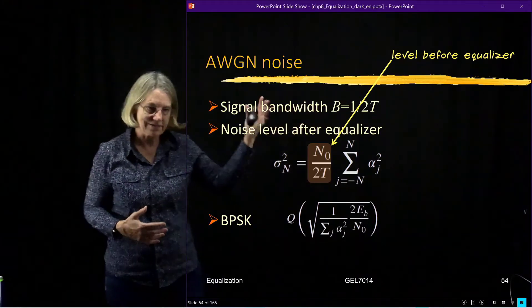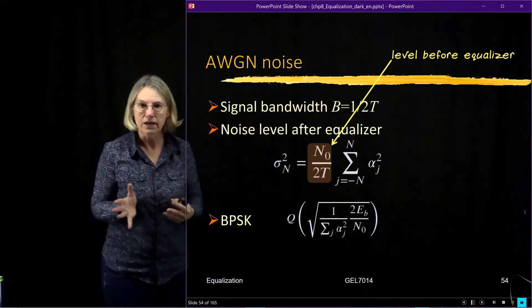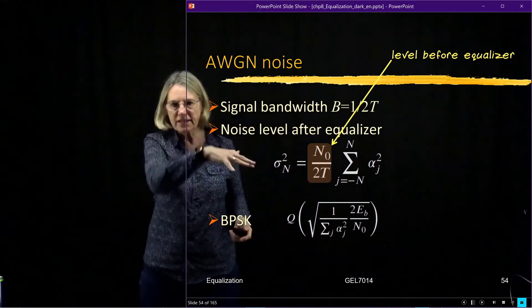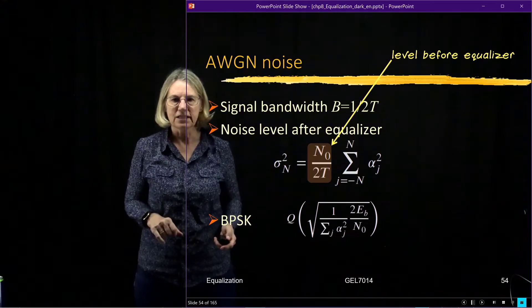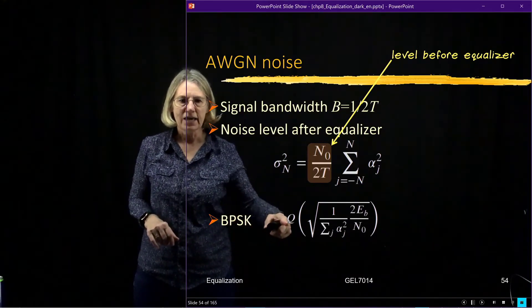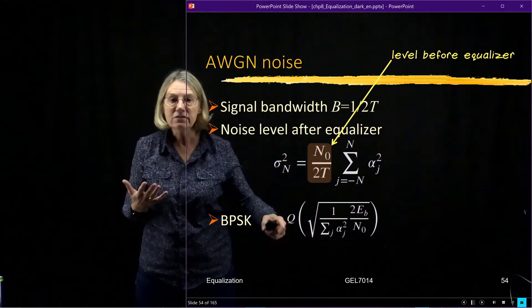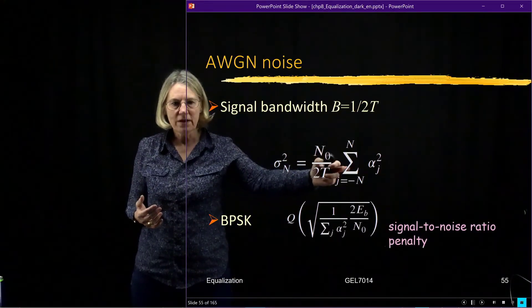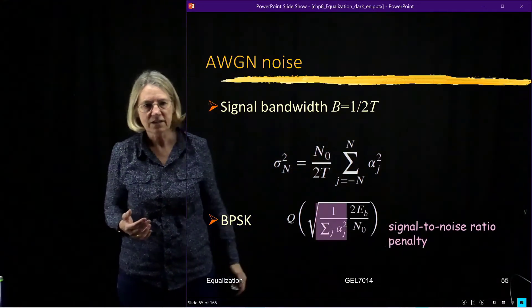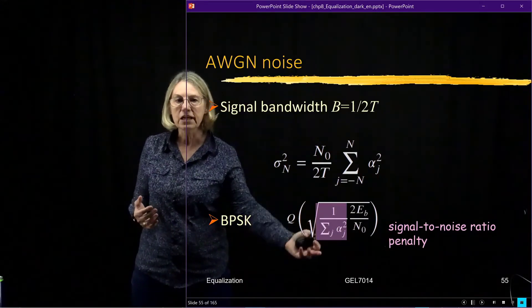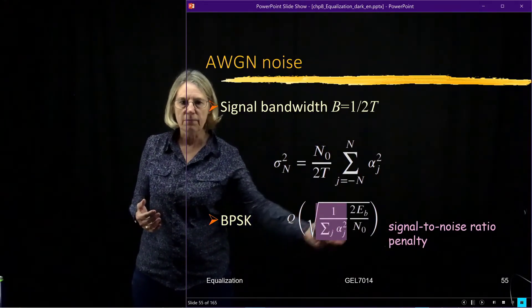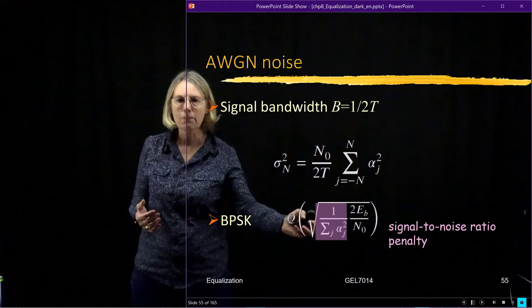This first term is related to the signal to noise ratio before the equalizer. If we were to plug this noise level into the BPSK bit error rate representation, we would see this term here—the summation—come out as a penalty to the signal to noise ratio. I'm reducing the signal to noise ratio by this amount.